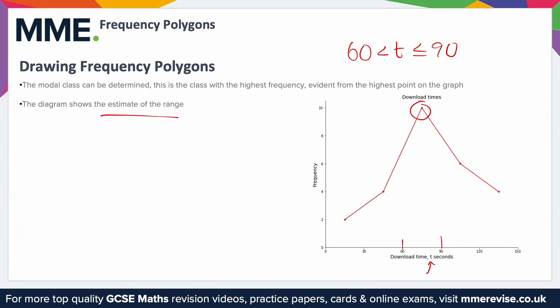So an estimate we could take is this point here, because of course this is our lowest class, and this is our biggest class. So this lies at an x value, or a midpoint of 15, and this one lies at 135. So the range for this will be 135, take away 15, so 120.